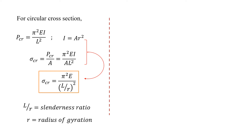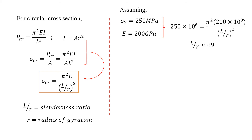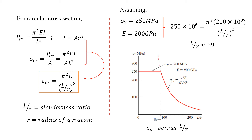To plot the graph of critical stress versus slenderness ratio, we look at the material properties. Assuming the yield stress for steel is 250 MPa and Young's modulus is 200 GPa, substituting these parameters into the equations gives a slenderness ratio of approximately 89. Plotting critical stress versus slenderness ratio: from 0 to 89 the yield stress remains constant at 250 MPa, and starting from 89 it decreases according to the critical stress equation.